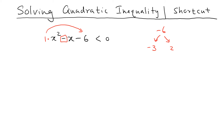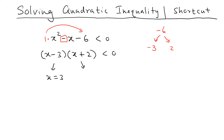So we can write the factorization directly: it is (x minus 3) times (x plus 2). The next step is to find the zeros. x minus 3 gives zero at x equals 3, and x plus 2 gives zero at x equals negative 2, because at those values the factors become 0.